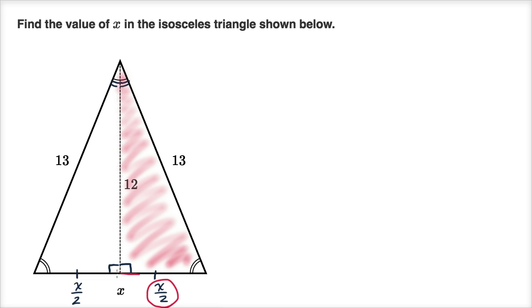that's the base right over here, this side right over here. We could write that x over two squared plus the other side, plus 12 squared, is going to be equal to our hypotenuse squared, is going to be equal to 13 squared.